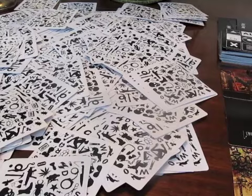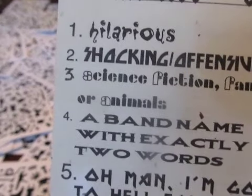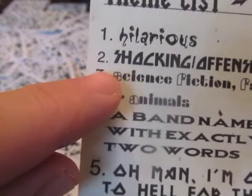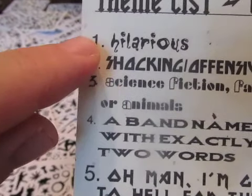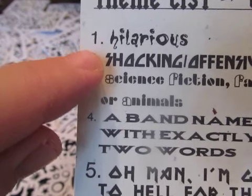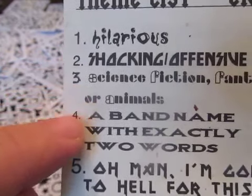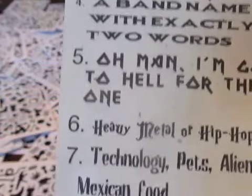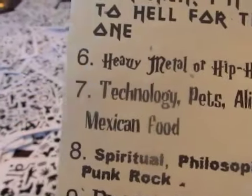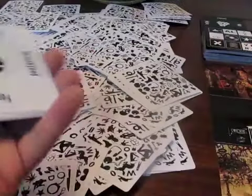You are now ready to play. First, the player with the theme list announces the first theme as well as the up-and-coming theme that will be used for the next round. Themes are numbered from 1 to 20, and players will try to create band names that fit the theme of the current round while trying to preserve cards that may fit better for the next round.